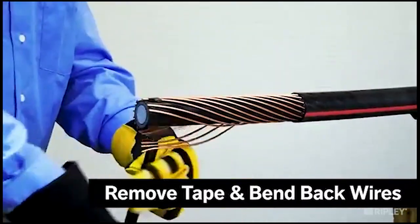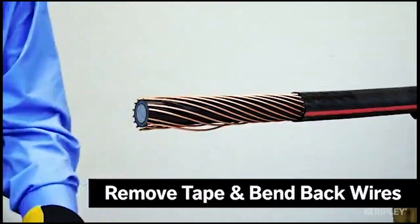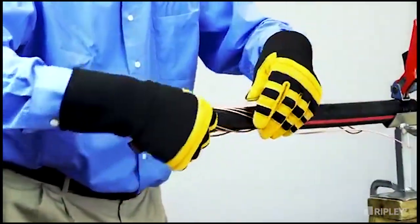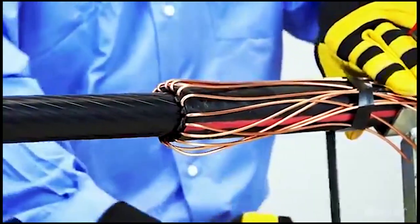Unwrap the electrical tape from the concentric wires and bend them back over the remaining jacket exposing the semi-con. Then secure in place.